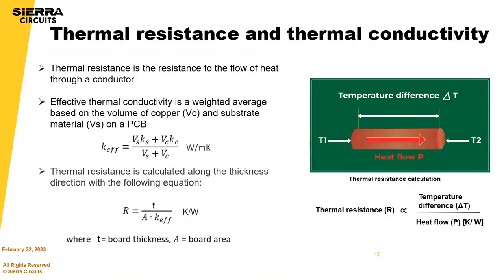Here are the basic equations for calculating thermal resistance and effective thermal conductivity. This helps in deciding the low resistance path for heat dissipation — the higher the resistance, the tougher the heat flow. Thicker substrate materials have lower resistance than thinner ones. These equations are built into the tool you're going to see.